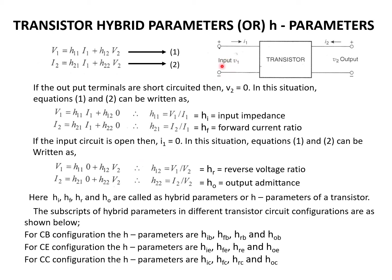If the input circuit is open — meaning input current I1 = 0 — then from the two equations we get H12 = V1/V2, which is said to be the reverse voltage ratio. It is reverse because this is input divided by output, not output by input. H22 = I2/V2, which is the output admittance — the reciprocal of impedance. Impedance is voltage by current; admittance is current by voltage. So HI, HR, HF, and HO are the hybrid parameters of a transistor.